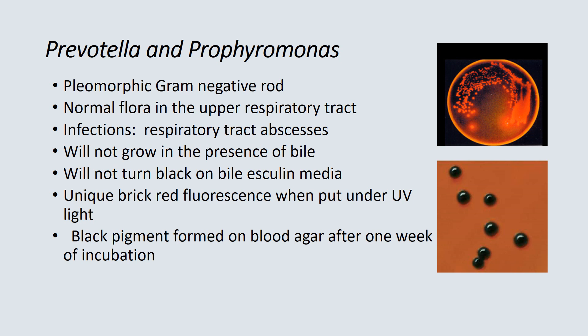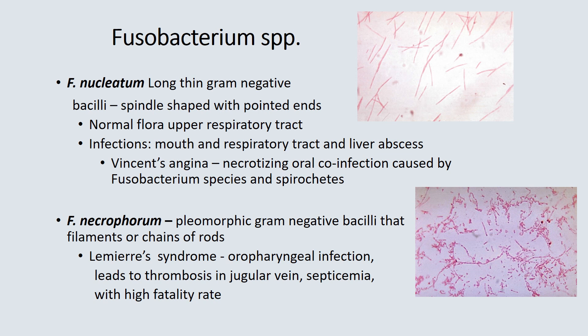Prevotella and Porphyromonas were formerly classified as Bacteroides species but have been reclassified. They are pleomorphic gram-negative rods found as normal flora in the upper respiratory tract and usually cause respiratory tract abscesses. They will not grow in the presence of bile — they will not turn black on bile esculin media. However, they produce a unique brick red fluorescence under UV light after about one week of growth on blood agar, and over about one week's time also form a black pigment on blood agar.